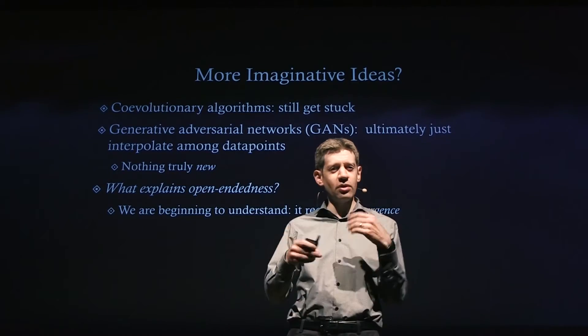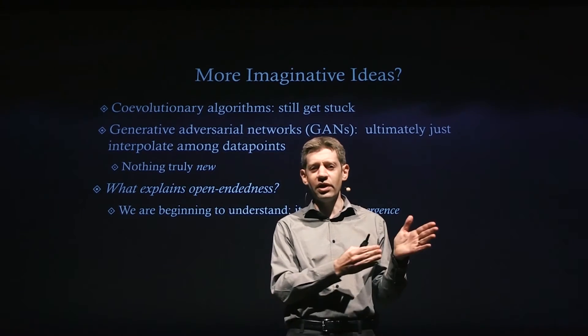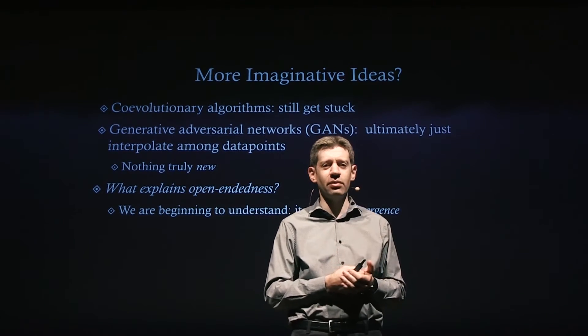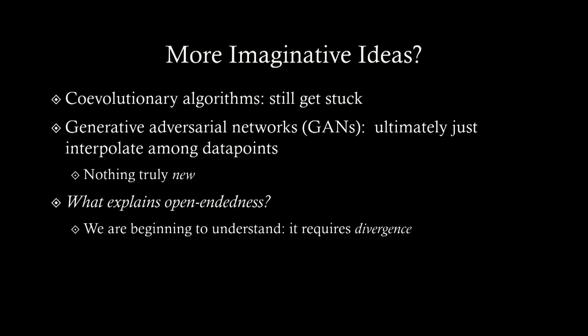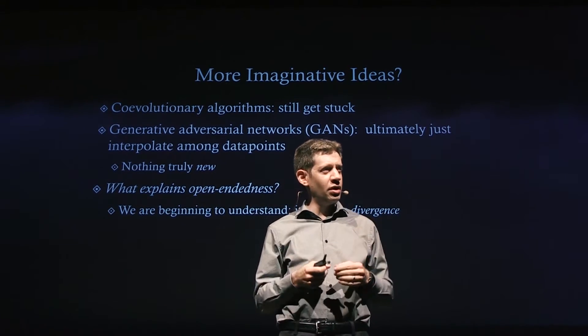There are what are called co-evolutionary algorithms — algorithms where the entities being evolved interact with each other while they're evolving. It's a little more like nature in that sense. You could have a competition among evolving entities that leads to an arms race, and maybe they keep getting more complicated. But these algorithms have been shown to still eventually get stuck.